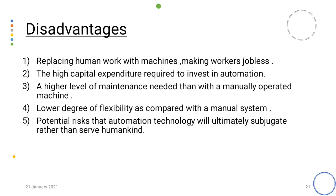These are the disadvantages. 7. Replacing human work with machines making workers jobless — it leads to unemployment if most of the work is done by machines and robots. 8. High capital expenditure required to invest in automation. A higher level of maintenance needed than with a manually operated machine. 9. Lower degree of flexibility as compared with the manual system. 10. Potential risk that automation technology will ultimately subjugate rather than serve humankind.